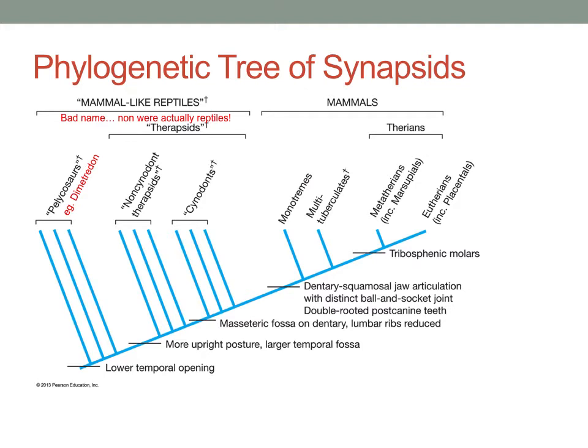Here's the phylogenetic tree of synapsids. Remember that synapsids are being distinguished from sauropsids. We spent the last couple lectures talking about sauropsids — the birds, crocodiles, amphibians, reptiles. What all those creatures have is a diapsid skull — two temporal openings in their skull. Synapsids only have one. Synapsids are broadly divided into a couple groups: mainly the mammals, and then the non-mammal synapsids, which were previously called mammal-like reptiles, though none of them were actually reptiles.